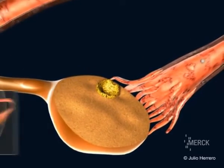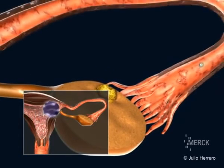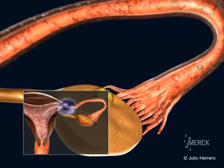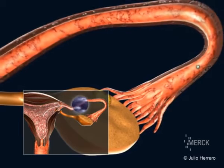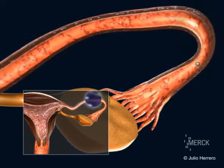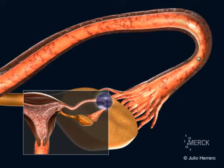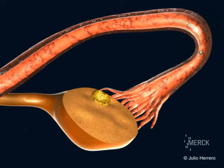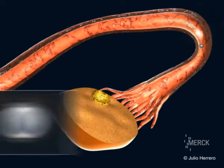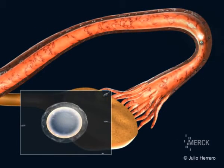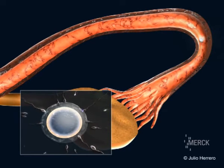If sexual intercourse occurs, the semen deposited in the vagina starts its ascension into the tube and the sperm eventually arrive at the oocyte. One of these will succeed in penetrating into the interior of the oocyte.